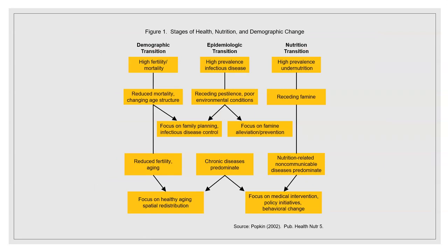Looking at the stages of health, nutrition, and demographic change together in one diagram, we can see all three transitions at once. The demographic transition moves from high fertility and mortality downward. The epidemiological transition shows a shift from high prevalence of infectious diseases — where in some countries people are more likely to die from poor sanitation or malaria — toward chronic diseases becoming more prominent. The nutrition transition follows alongside these changes.